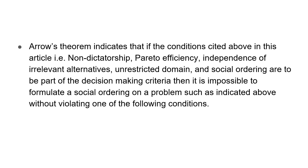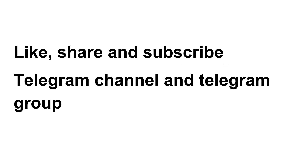Arrow's Impossibility Theorem states that if the conditions cited — such as non-dictatorship, Pareto efficiency, independence of irrelevant alternatives, and others — are required to be part of decision making, then it is impossible to formulate a social ordering by satisfying all the criteria. You would need to violate at least one of the specified conditions. That's all about Arrow's Impossibility Theorem.